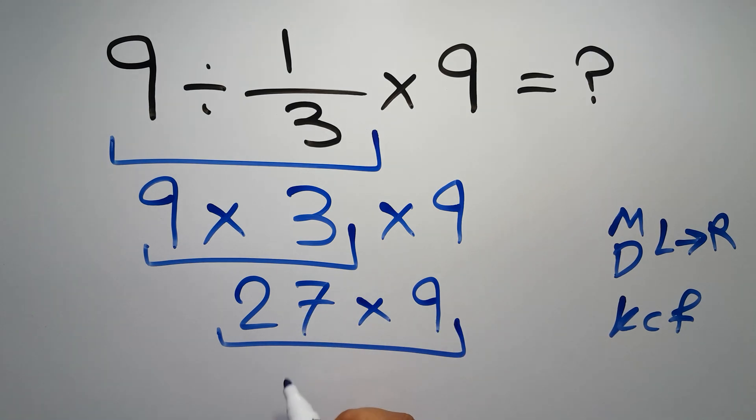9 times 7 gives us 63. So we write 3 here and carry 6 here. No, 9 times 2 equals 18, and 18 plus 6 gives us 24. So we have 243.